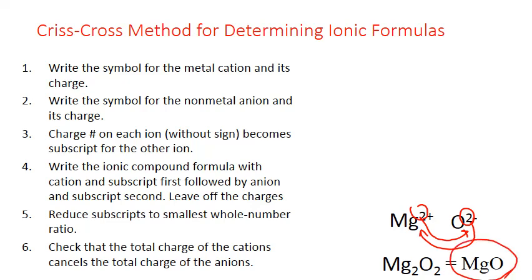Just remember, ionic compound formulas are always empirical. The one thing to look out for when using the crisscross method is that you will not always get the lowest whole number ratio when you crisscross those charges, so you have to make sure to reduce.